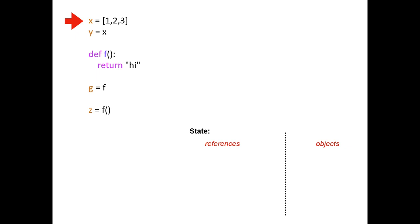I want to point out that one line in this code is radically different from everything we've seen so far. Take a minute and stare at this — see if you can figure out which line is different. In fact, it's this line right here: g equals f. That's the one that's radically different. You may have actually seen this as a bug if you forgot to write the parentheses when calling a function.